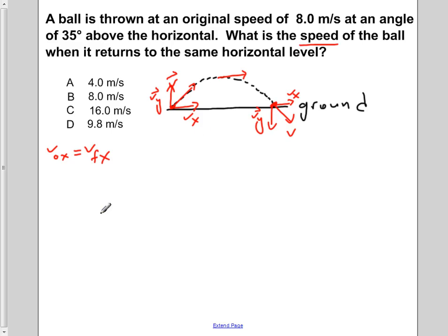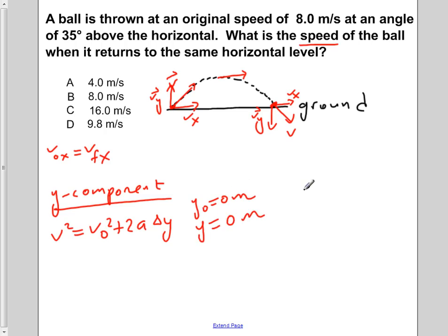So to determine this for the y component, we're going to use V squared equals V0 squared plus 2a delta y. Now at its initial position, y0 is equal to 0 meters and y, our final position, is equal to 0 meters as well.